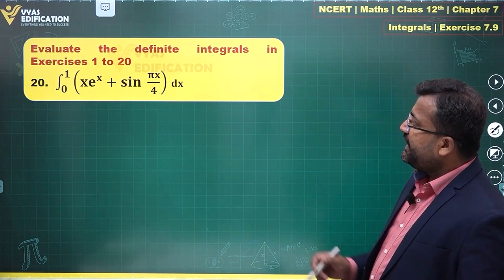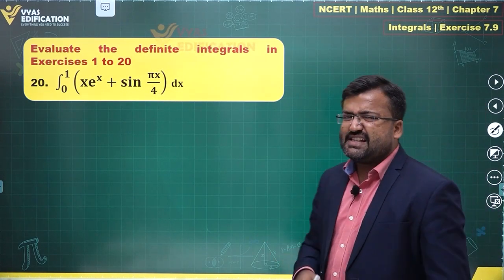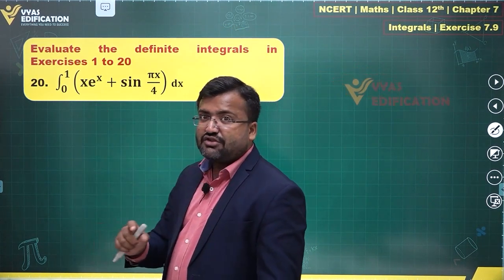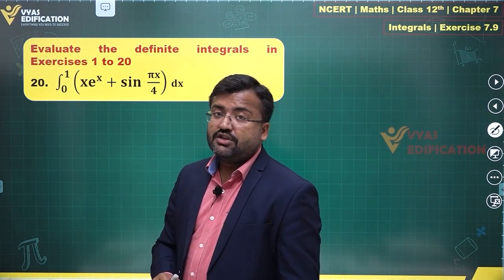Question 20 says evaluate the integral from 0 to 1 of xe^x plus sin(πx/4) dx. How do we do that? This xe^x is actually a product of two functions, so integration of this can be done with the help of by parts, or there's a special integral related to e^x we can use.